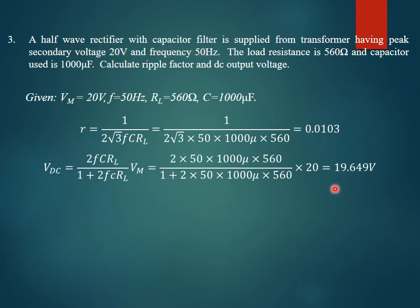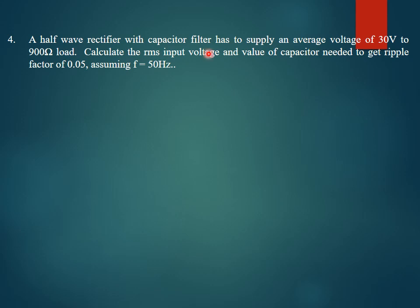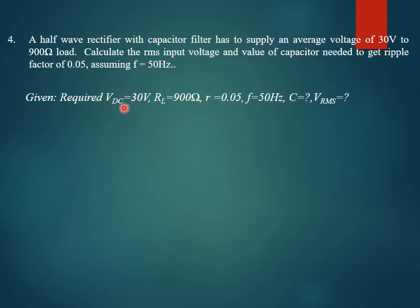The fourth problem involves a half-wave rectifier with a capacitive filter required to supply an average DC voltage of 30 volts across a 900-ohm load. We need to find the RMS input voltage and the capacitor value such that the ripple factor is less than 0.05, assuming a frequency of 50 Hz. Given parameters: VDC = 30 V, RL = 900 Ω, ripple factor = 0.05, f = 50 Hz.